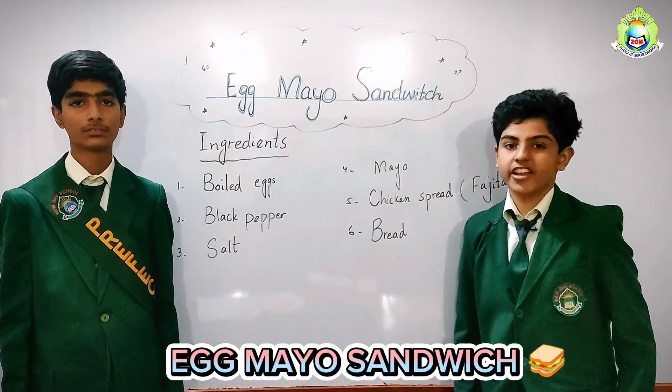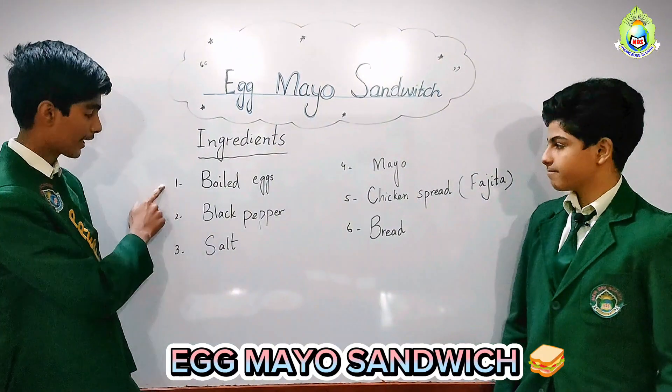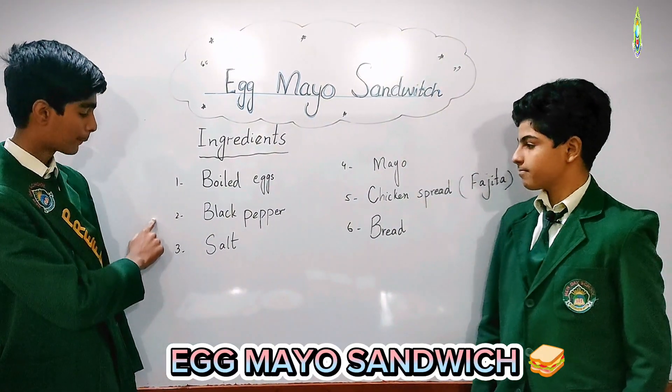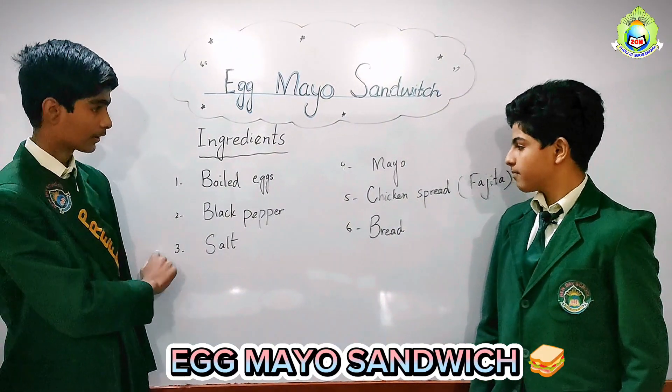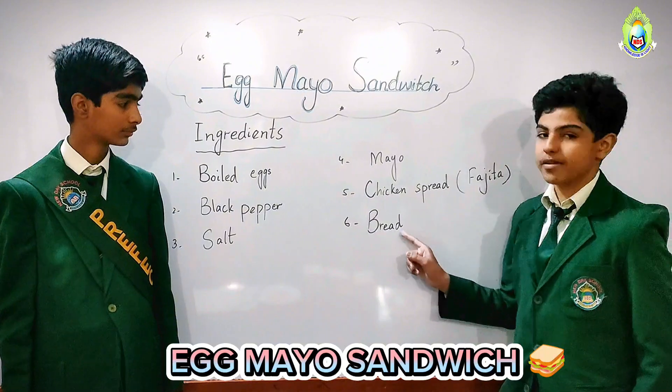So we need different types of ingredients: boiled eggs, black pepper, salt, mayo, chicken spread, and bread.